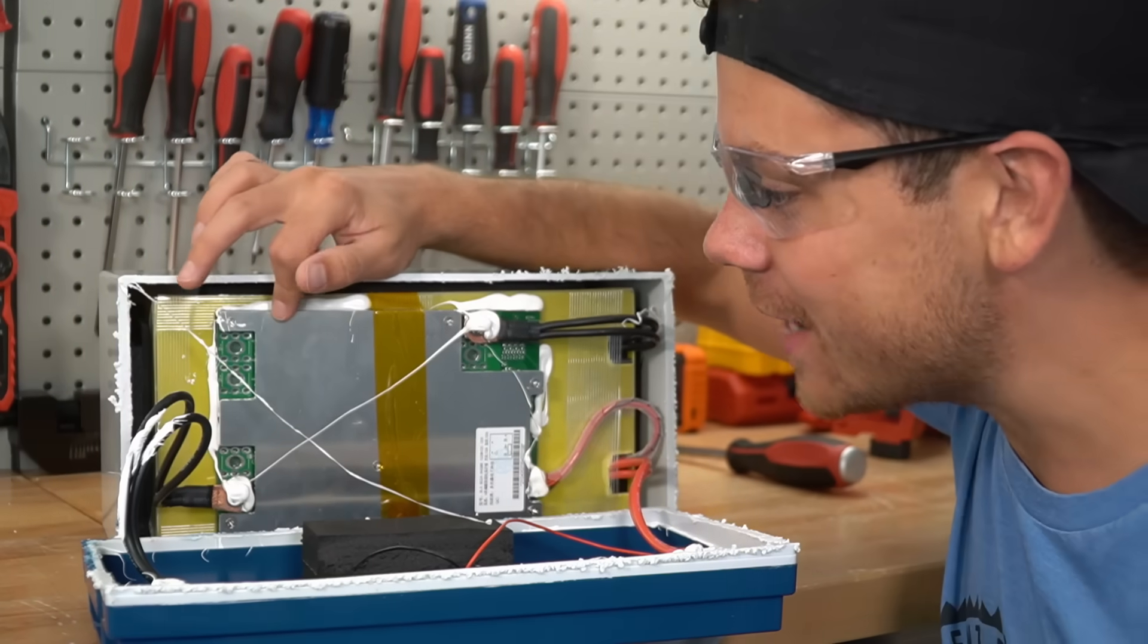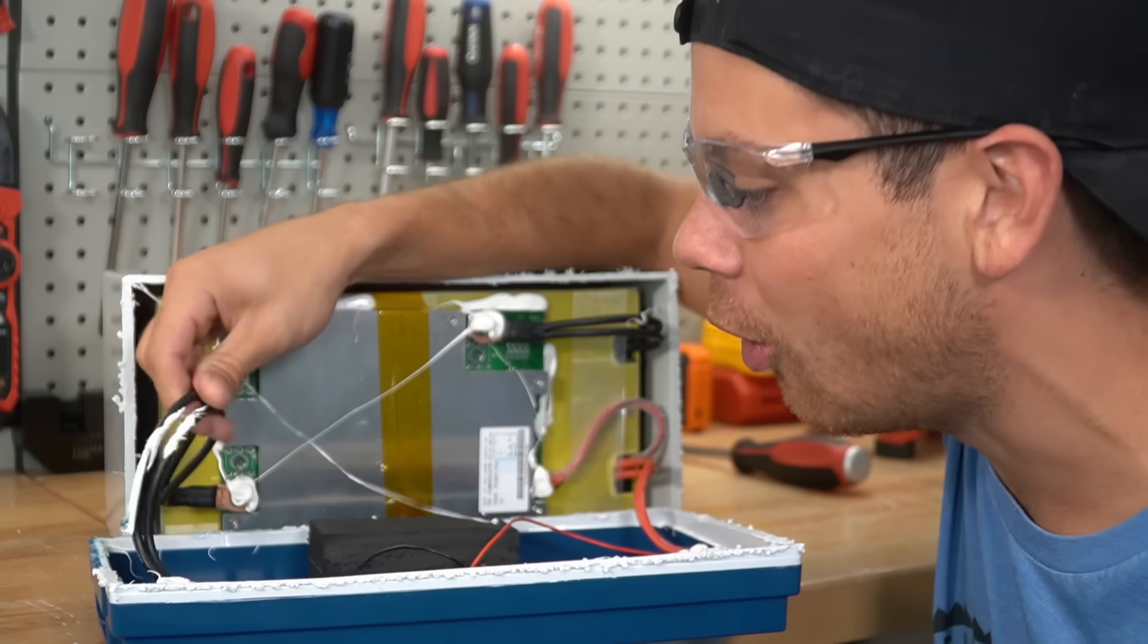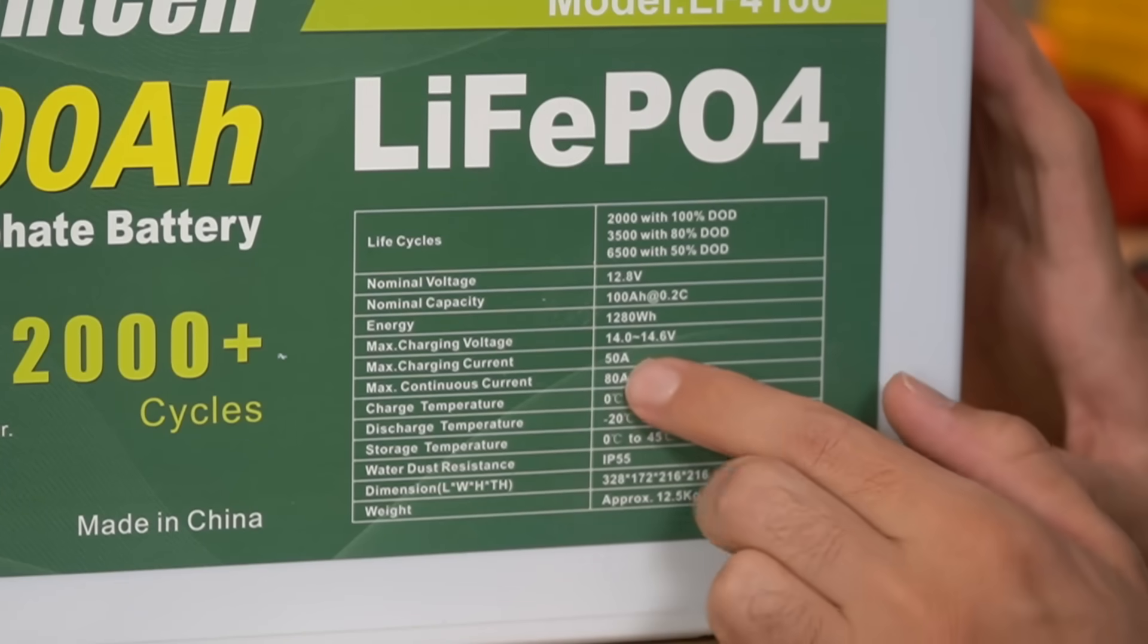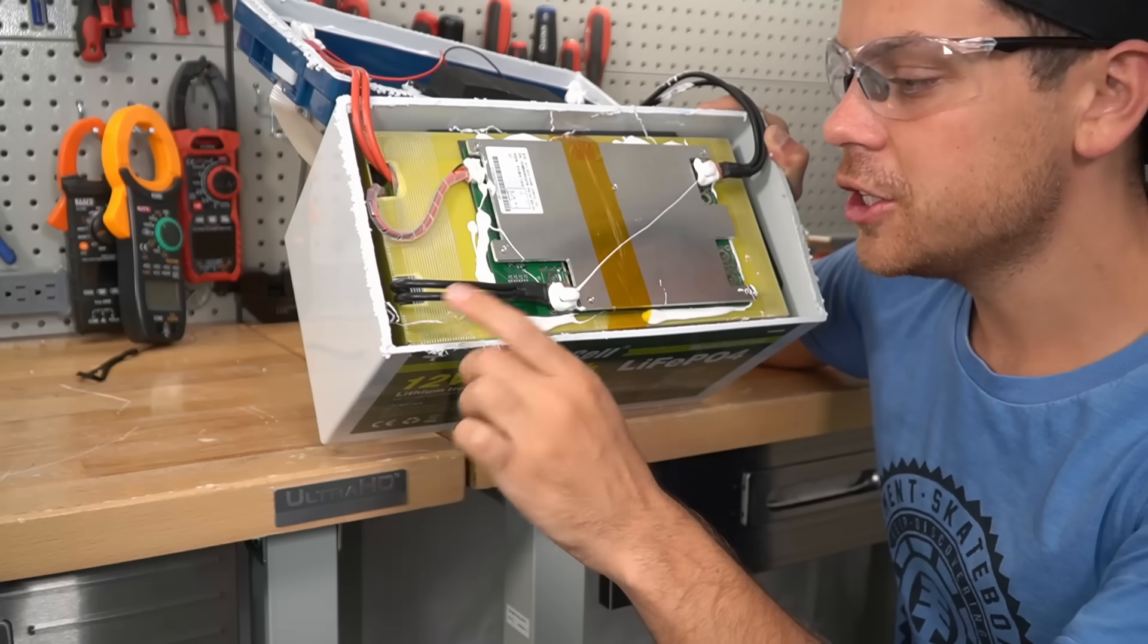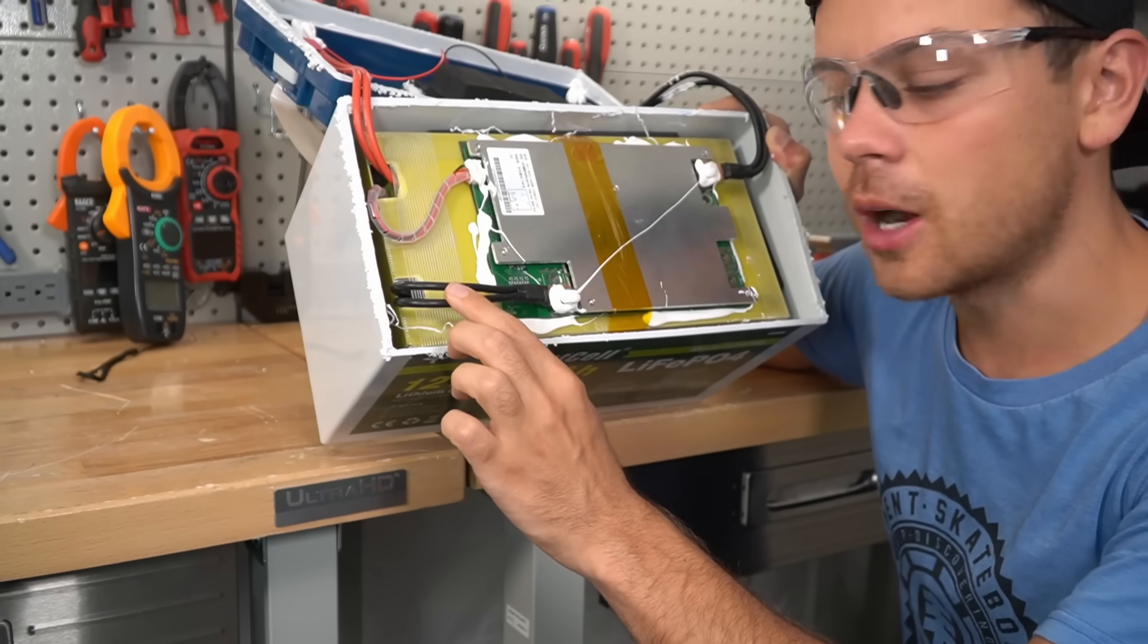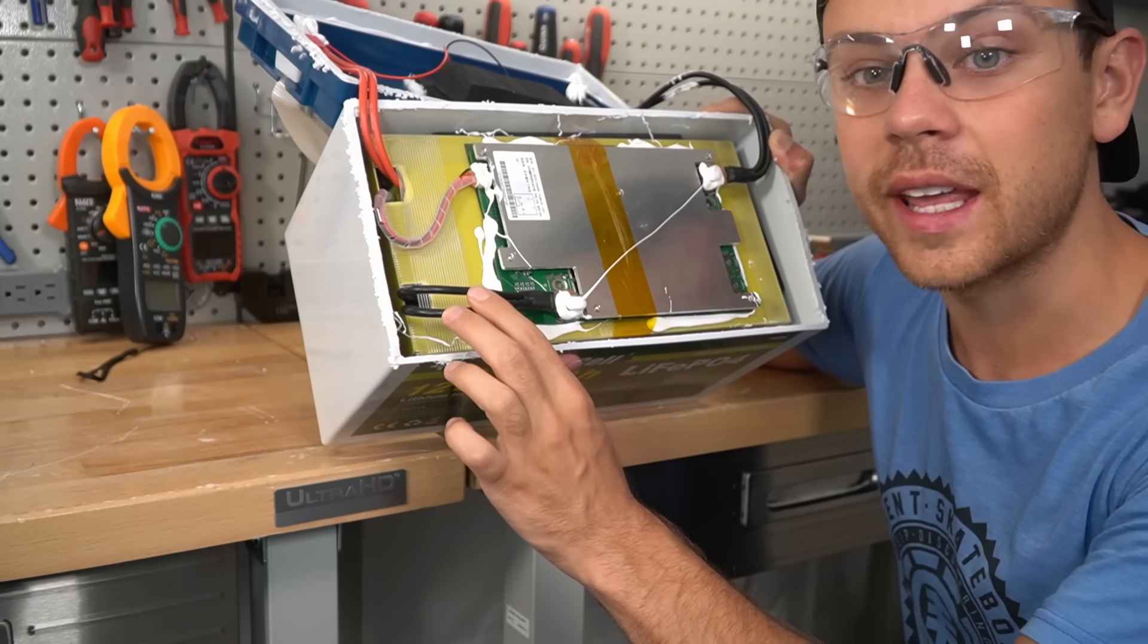So it has a massive BMS but look at these small wires. And this is because the max continuous discharge current is only 80 amps. 200C insulation pure copper conductors can actually handle 40 amps each.